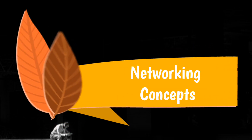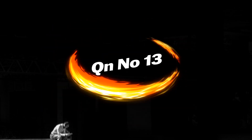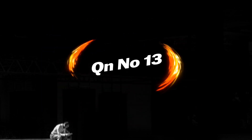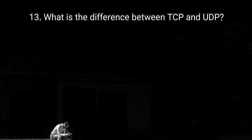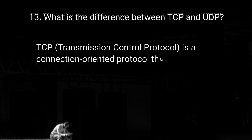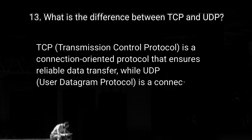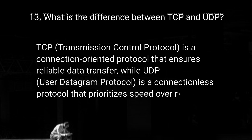Moving on: networking concepts. Question number 13: what is the difference between TCP and UDP? TCP is a connection-oriented protocol that ensures reliable data transfer, while UDP is a connectionless protocol that prioritizes speed over reliability.